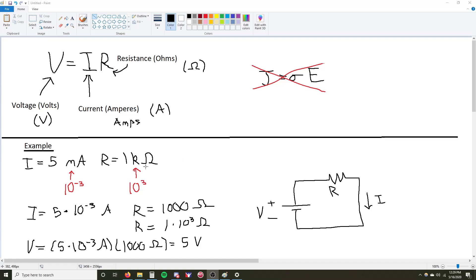In this case, we are given milliamps and kilo-ohms. If you understand that milli is a modifier of 10 to the negative 3, and kilo is a modifier of 10 to the 3, you would understand that these cancel out and you would get voltage anyways.